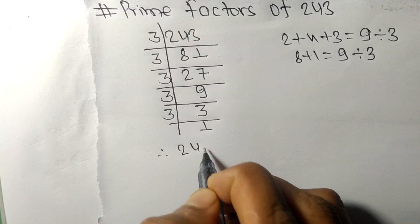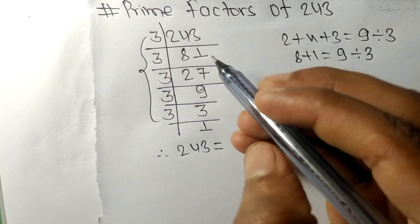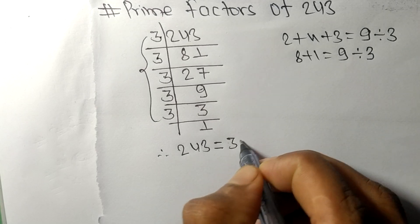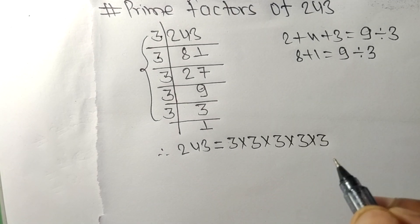Therefore 243 is equal to, from this side it is 1, 2, 3, 4, 5 times 3. So 3 multiplied 5 times.